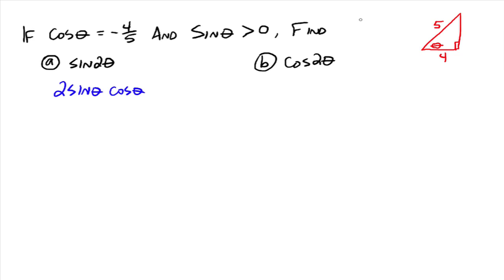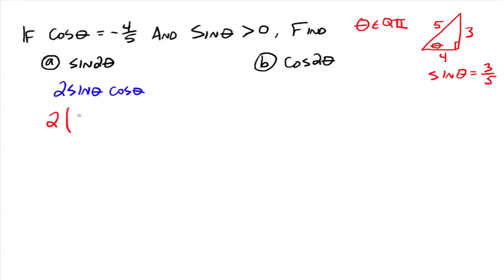What quadrant is theta in? Cosine is negative and sine is positive, so that's quadrant 2. Using the values 4 and 5, the missing side is the square root of 25 minus 16, which is 3. Therefore sine of theta equals 3/5 (opposite over hypotenuse). Now we can find sine of 2 theta: 2 times (3/5) times (negative 4/5), which gives sine of 2 theta equals negative 24/25.